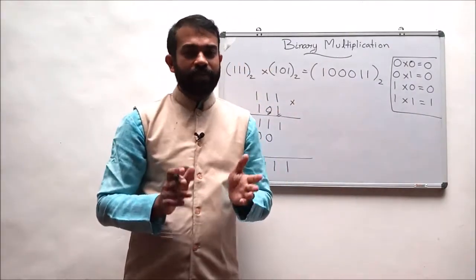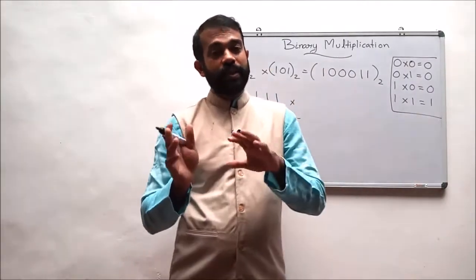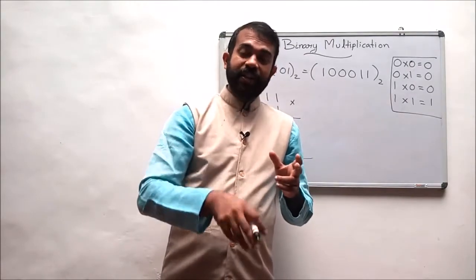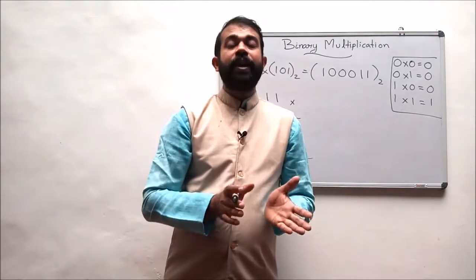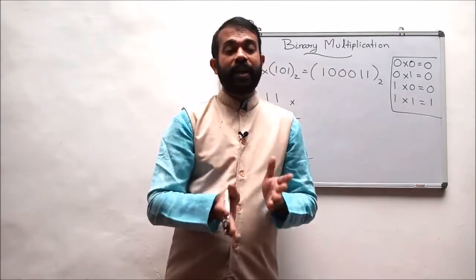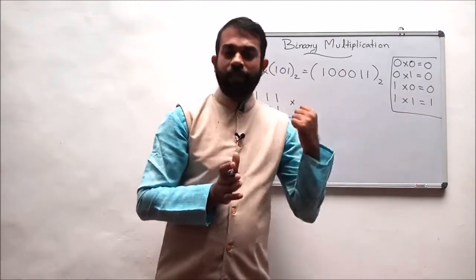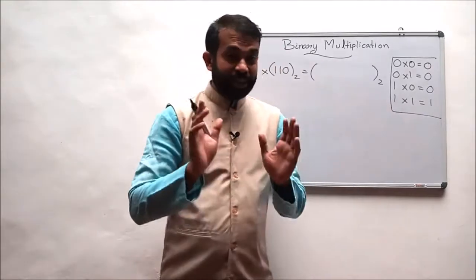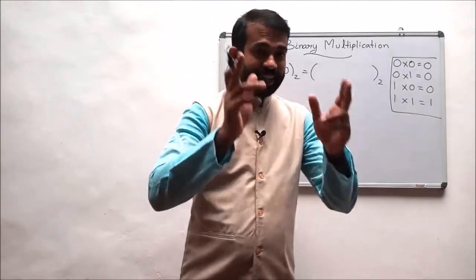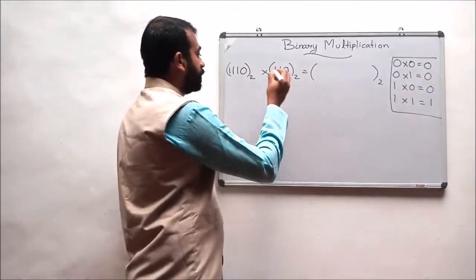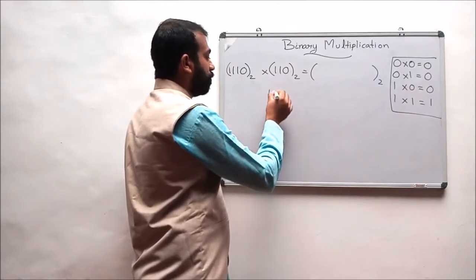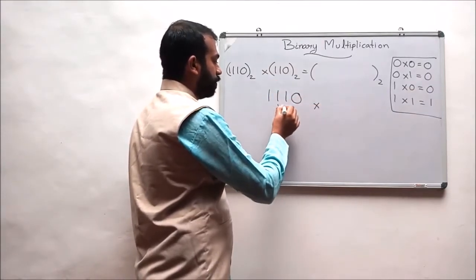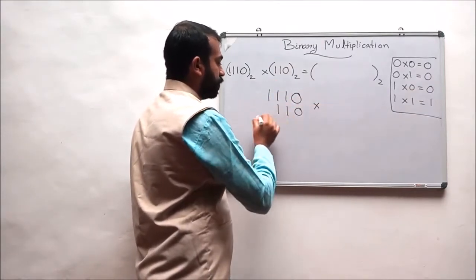In the first set of operations, what we have to do is multiply. And secondly, the binary addition rules are applied and binary additions are performed in this multiplication process. In the second example, what we are doing is multiplying 1110 with 110.